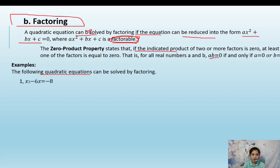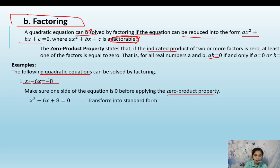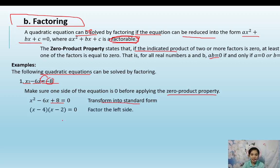For all real numbers a and b, ab equals 0 if and only if a equals 0 or b equals 0. For example, the following quadratic equation can be solved by factoring: x squared minus 6x equals negative 8. Make sure one side of the equation is 0 before applying the zero product property. Transpose negative 8 to the other side — it becomes positive 8 — transforming it into standard form.